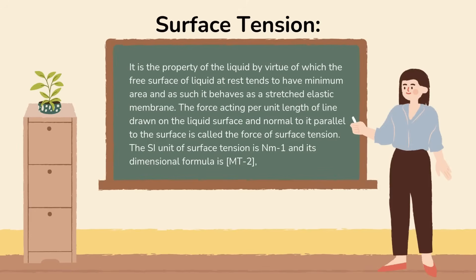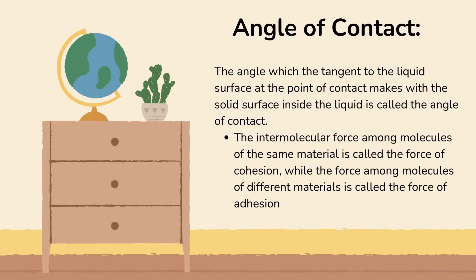Surface tension is the property of a liquid by virtue of which the free surface of a liquid at rest tends to have a minimum area and behaves like a stretched elastic membrane. The force acting per unit length of a line drawn on the liquid surface and normal to it, parallel to the surface, is called the force of surface tension. It is given by surface tension = F/L. The SI unit of surface tension is N·m⁻¹ and its dimensional formula is M·T⁻². The angle which the tangent to the liquid surface at the point of contact makes with the solid surface inside the liquid is called the angle of contact. The intermolecular force among molecules of the same material is called the force of cohesion, while the force among molecules of different materials is called the force of adhesion.